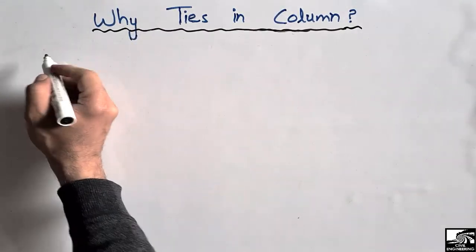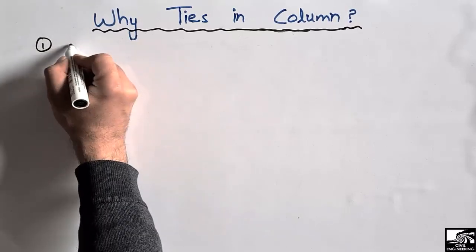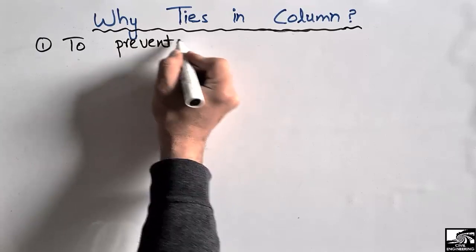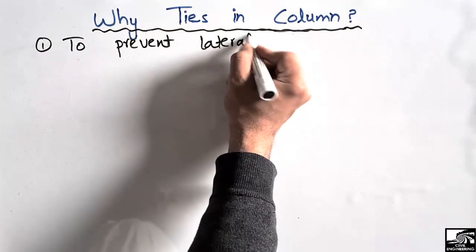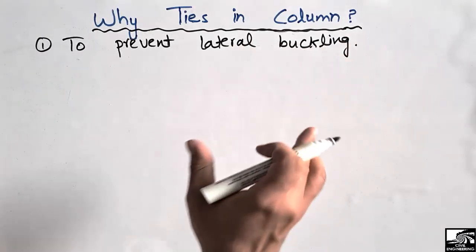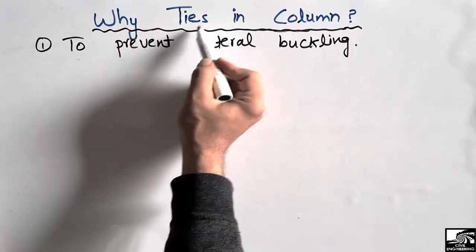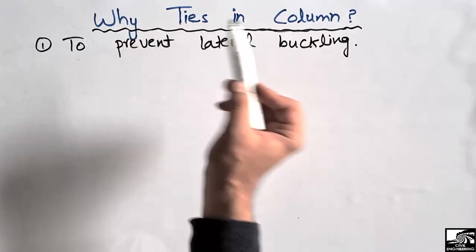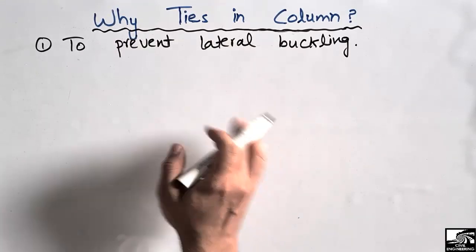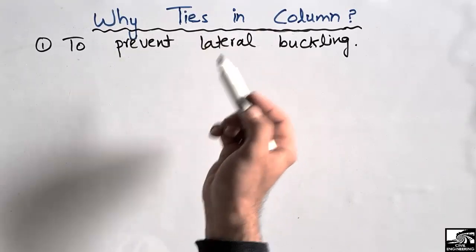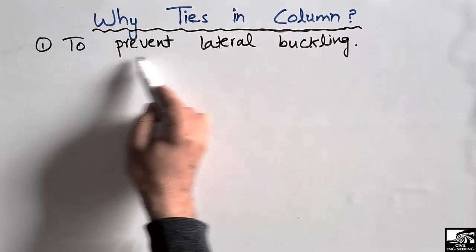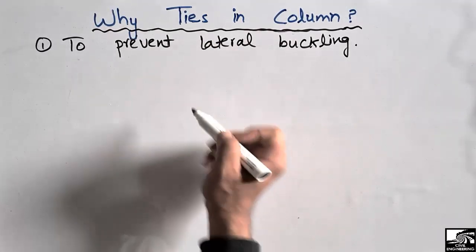The first reason is that ties prevent the lateral buckling of the reinforced concrete column — they do not allow the column to buckle. The ties are similar to stirrups in beams. Stirrups in beams are mainly used to resist shear stresses, while in columns, ties also resist shear stresses but serve additional purposes.